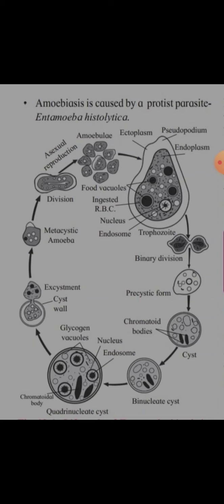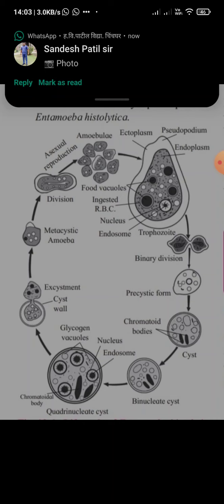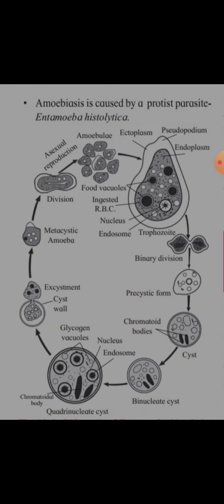The amoebuli will develop into the trophozoite, which is the infective stage. It has ectoplasm on the outside, endoplasm inside, and pseudopodia. Food vacuoles are present, and ingested RBCs are also present. This trophozoite will undergo binary cell division and will form the precystic form.